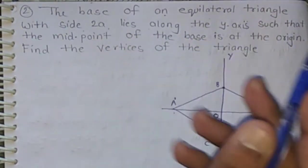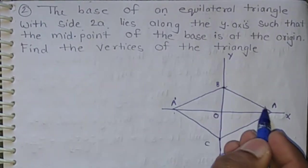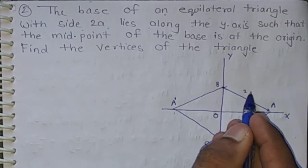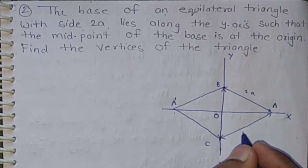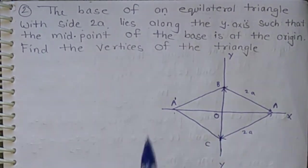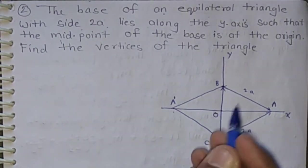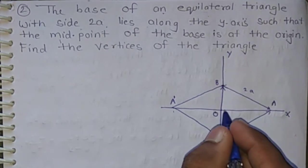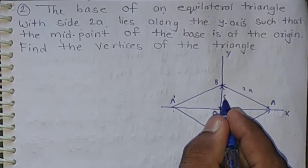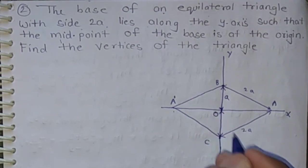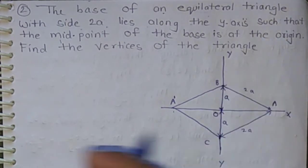The base of an equilateral triangle lies on y-axis with side 2a. The side of triangle is 2a, it is also 2a, and it is 2a. Since along the y-axis the midpoint of the base 2a is at origin, it is midpoint. OB is a and OC is also a and BC is 2a.